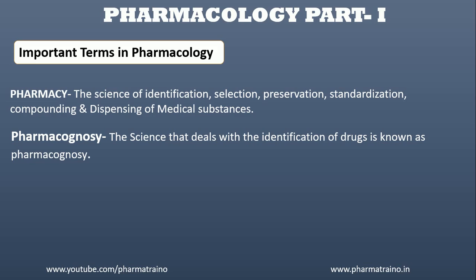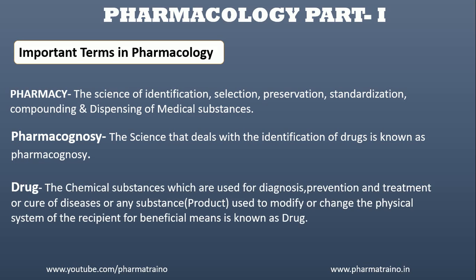Pharmacognosy: the science that deals with the identification of drugs is known as Pharmacognosy. Drug: the chemical substances which are used for diagnosis, prevention and treatment or cure of diseases, or any substances or product used to modify or change the physical system of the recipient for beneficial means, is known as drug.